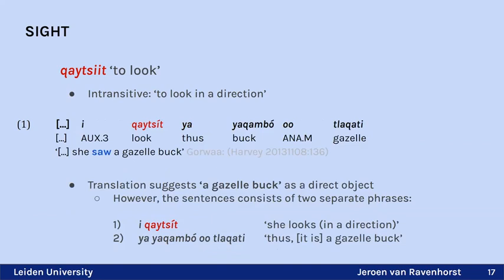In another example, the translation suggests an experience with the English word 'saw,' but 'kaitzid' does not take an object. The translation is quite free. The sentence can be split into two parts: 'she looks in a direction' and 'thus it is a gazelle-back' — so we should not interpret this as an experience, but rather note it as an imprecise translation.